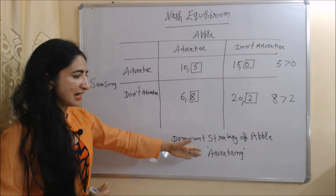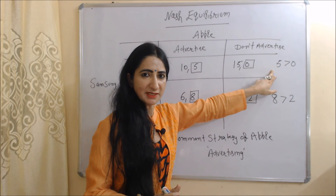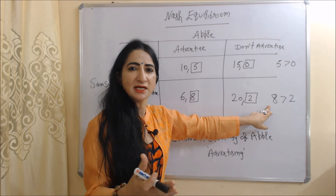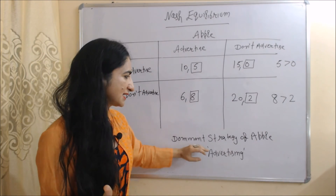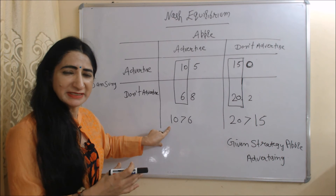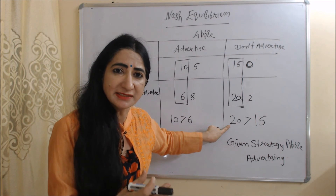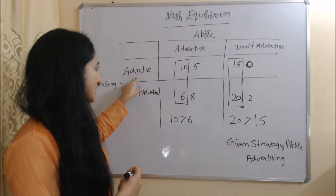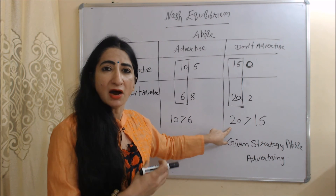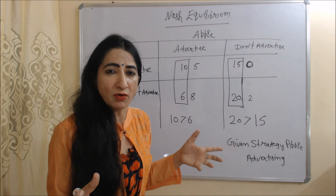Now we will see Nash equilibrium with the help of this table. The dominant strategy of Apple is advertising — in the first situation the outcome of advertising is greater, and in the second situation the outcome of advertising is also greater. So the dominant strategy of Apple is advertising. For Samsung, in the first case the outcome of advertising is greater, but in the second case the outcome of not advertising is greater — when Samsung advertises the outcome is 15, but when Samsung does not advertise the outcome is 20. So Samsung does not have a dominant strategy.